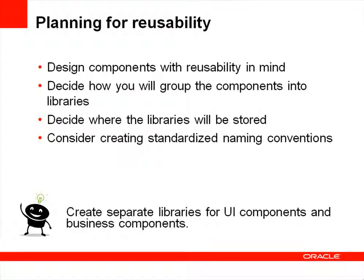Decide how to group the components into libraries that meet your organizational needs, and decide where the libraries will be stored. As a general rule, you should create separate libraries for UI components and business components. Also consider creating standardized naming conventions to make it easier for creators and consumers to work with your libraries.